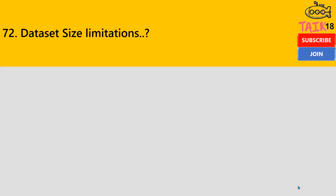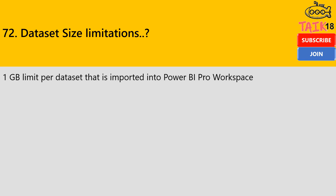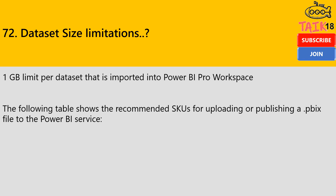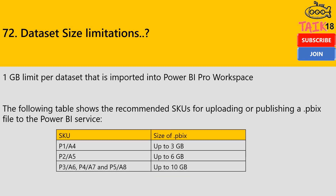The next question is dataset size limitations. If you are using a Pro workspace, there is a 1 GB per dataset limit. The following table shows the recommended SKUs for uploading or publishing a PBIX file into the Power BI service. As a best practice: if you are using a P1 or A4 license — P1 is for premium and A4 is for embedded capacity — the limit is up to 3 GB. For P2 it is up to 6 GB, and for P3, P4, or P5 it is up to 10 GB per file size.